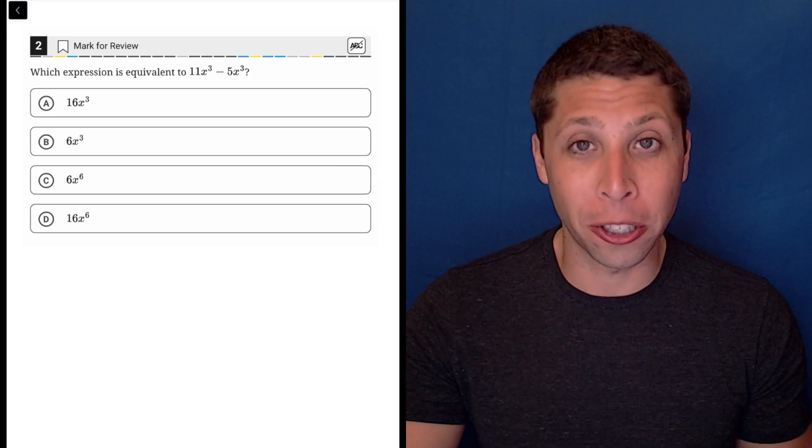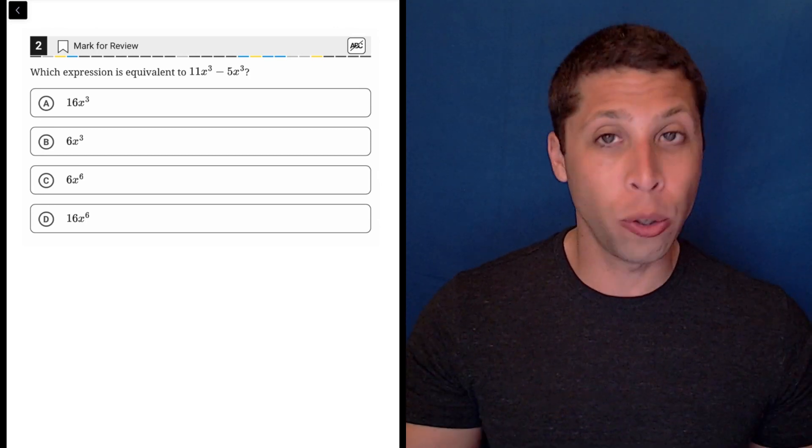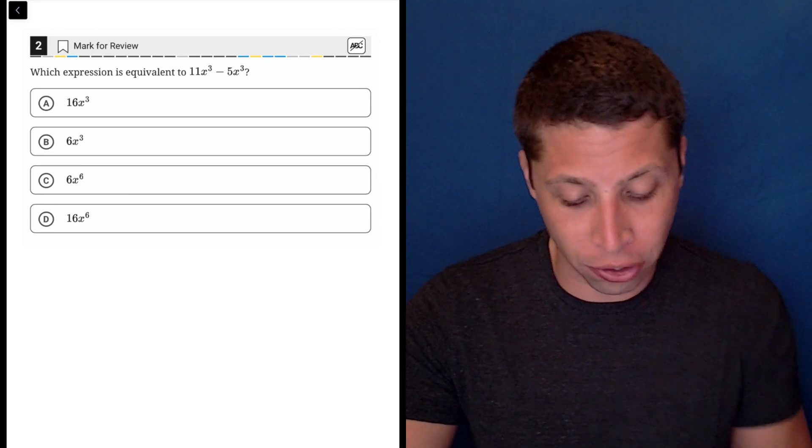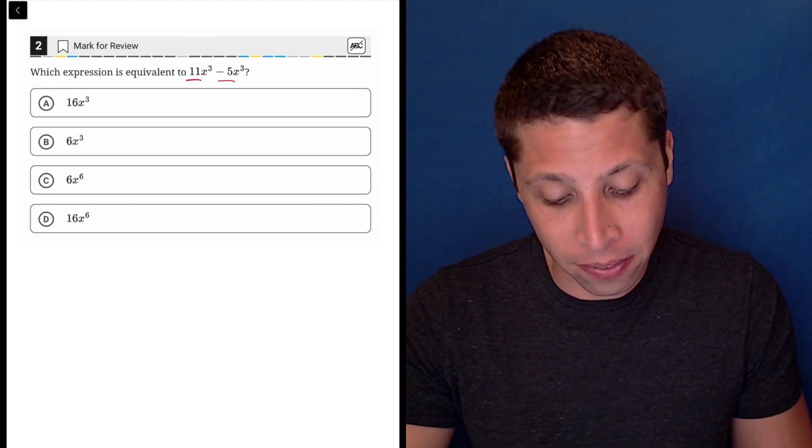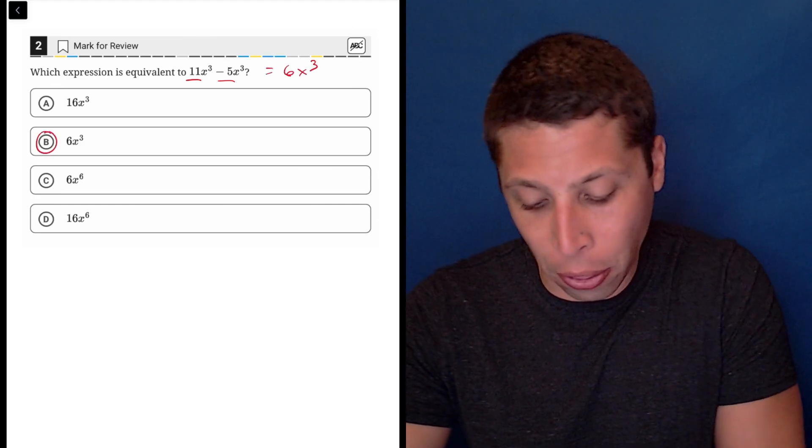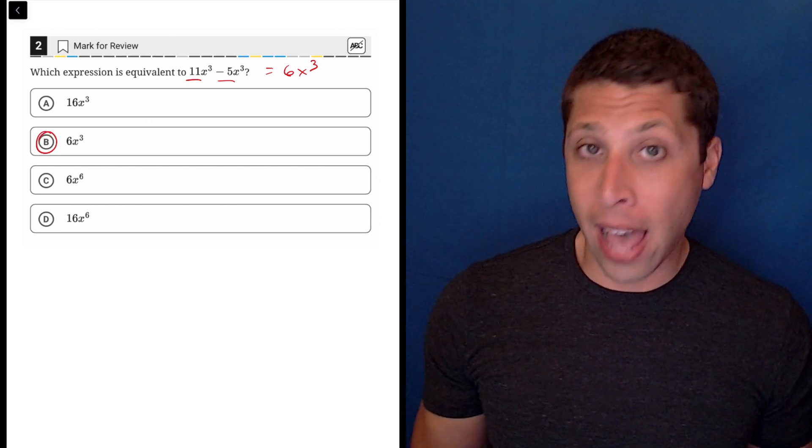Because these are both terms that are x to the third, we can just combine them. All you have to do is subtract the two coefficients. So 11 minus 5 is 6. So this should be 6x to the third. That is choice B. That is the answer.